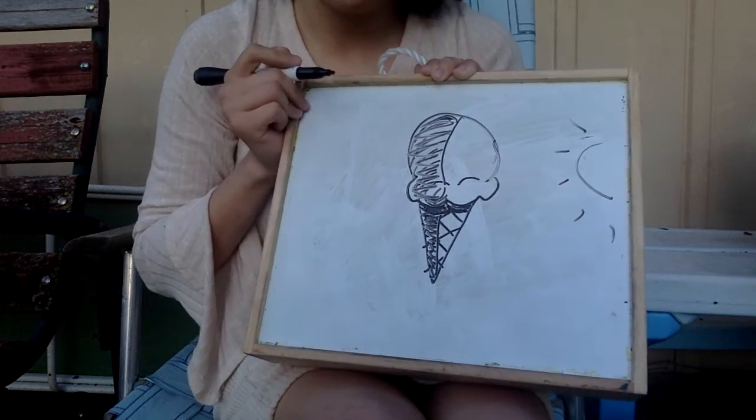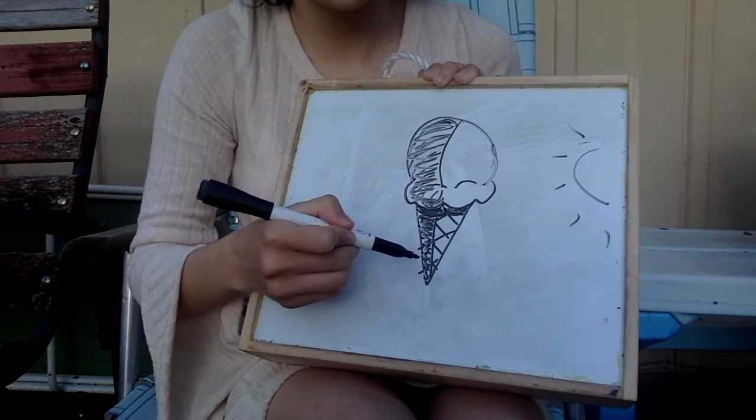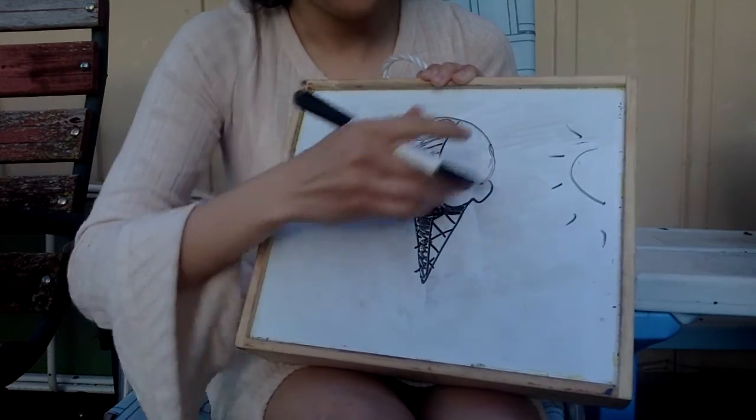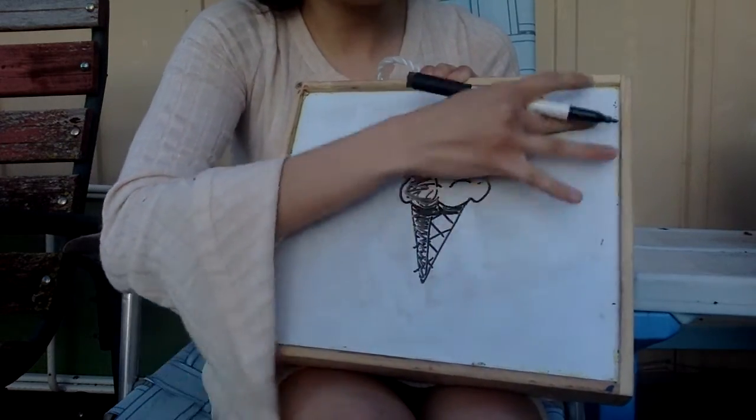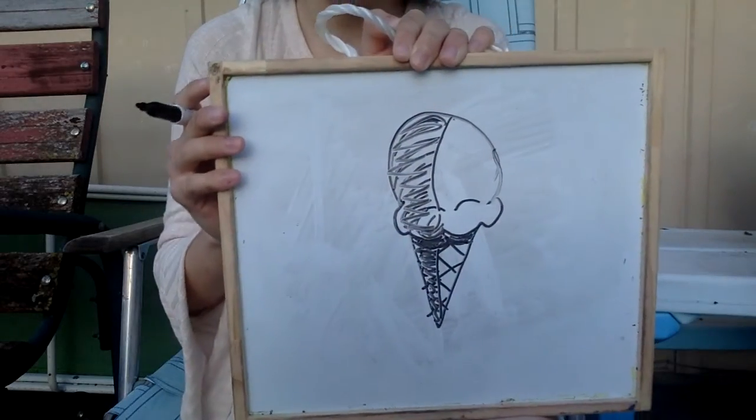Now our ice cream looks a little bit more 3D. It's got those shadows on it, and it looks like you can look at it from different sides. I can go ahead and erase my sun because I don't need the light anymore. And there we have it, 3D ice cream.